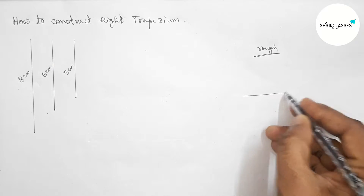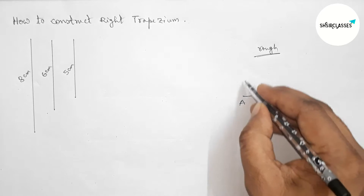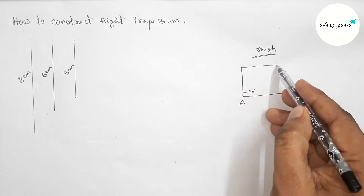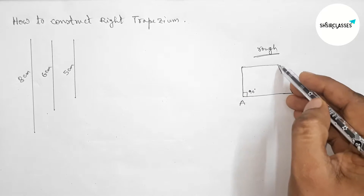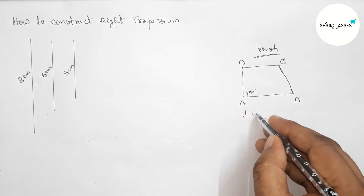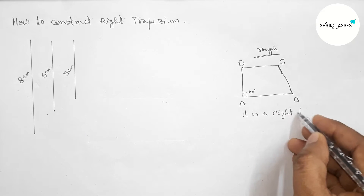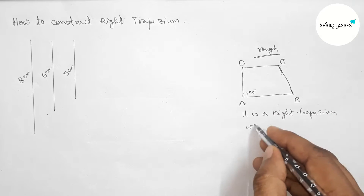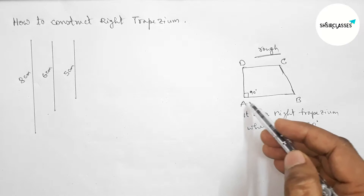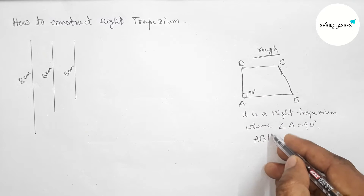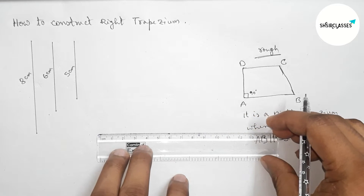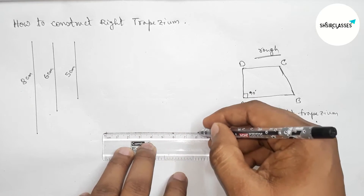First, drawing a right trapezium ABCD roughly. We can say it is a right trapezium if one angle is 90 degrees — here angle A is 90 degrees. Also, side AB is parallel with CD. Now I am going to apply this concept.